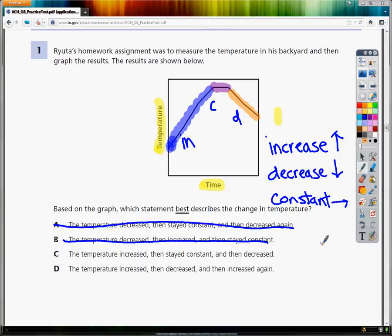Now I'm looking at C and D. C says the temperature increased, then stayed constant, and then decreased. That looks good.